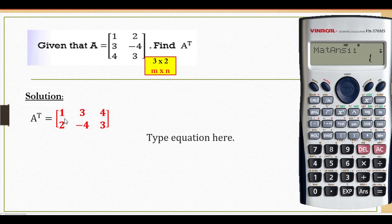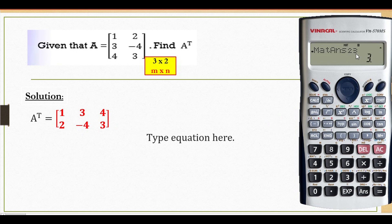For the result, element A 1,1 is 1. Then 1,2 — first row, second column — is 3. Then 1,3 — first row, third column — is 4. Then 2,1 — second row, first column — is 2. Second row, second column is negative 4. And the last one, second row, third column is 3. So it's 3 here.